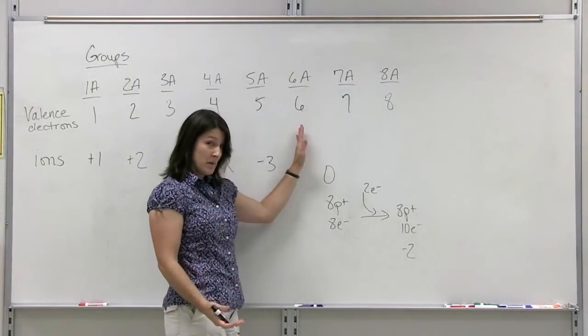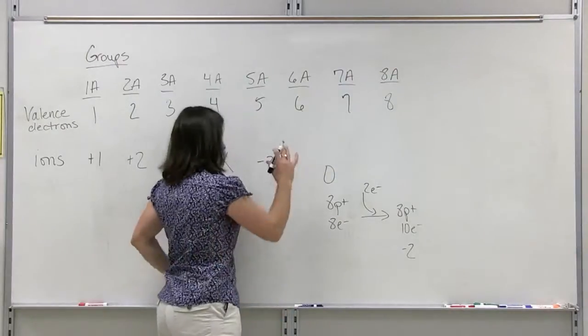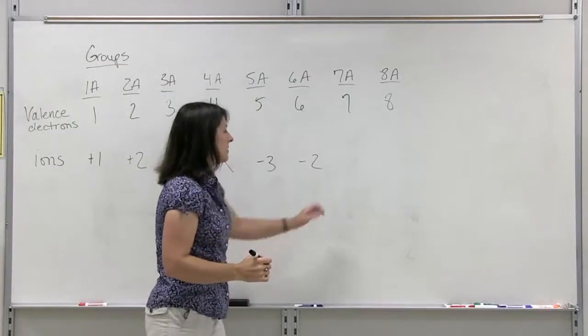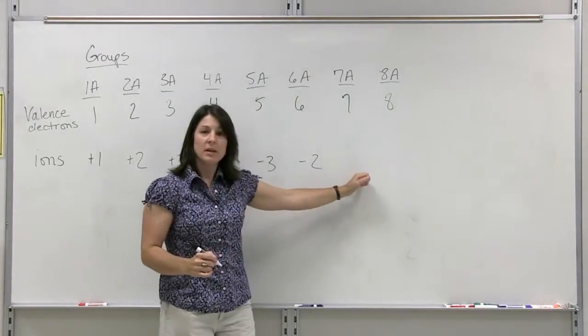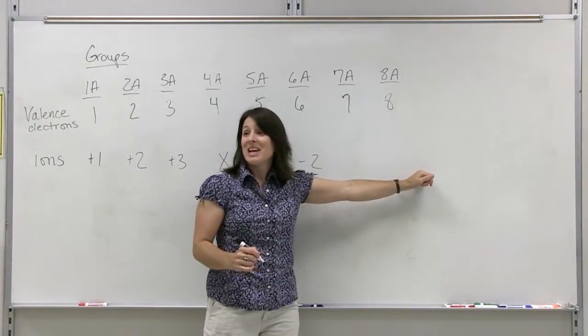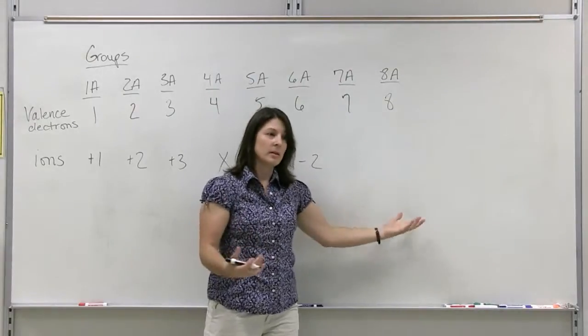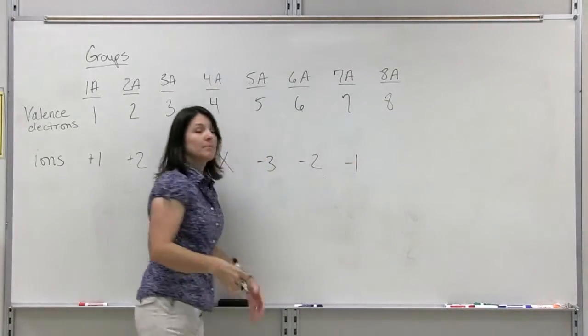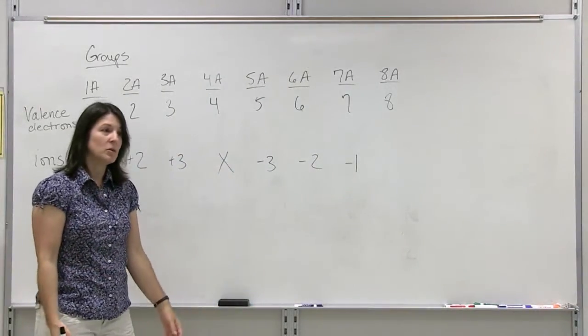Everything, all of the nonmetals in group 6A are going to do the same thing, have a negative two charge. Group 7A, seven valence electrons. They need to gain one more to look like the nearest noble gas, so they're going to have one extra electron. They're going to have a negative one charge.